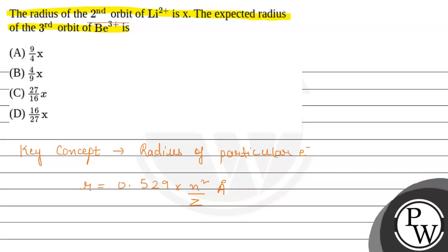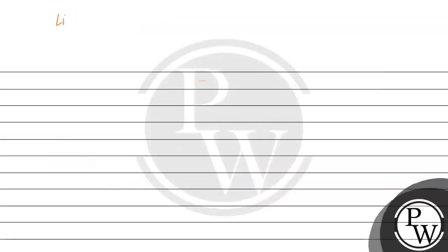the radius of the second orbit of lithium-2+ ion is given as x. For this we should know the n value and the z value, the atomic number for lithium, which is 3. And the n value, since it shows the 2+ ion in the second orbit, it will be 2.